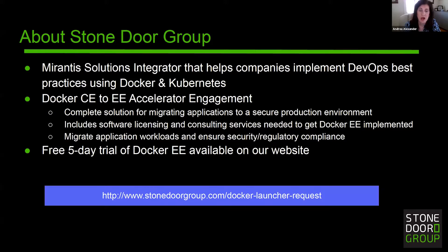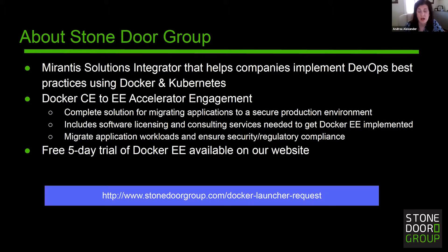The first is our Docker CE to EE Accelerator Engagement. This service provides an end-to-end solution for migrating your applications to a secure production environment. In our Accelerator Engagement, we take care of upgrading to Docker Enterprise Edition and migrating your applications. We provide all the licensing needed, as well as consulting services to ensure you successfully upgrade to EE and have the necessary controls in place. Most of our customers have typically implemented CE but are limited deploying to production due to security constraints. A typical engagement takes around two to three weeks from start to finish.